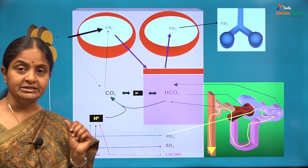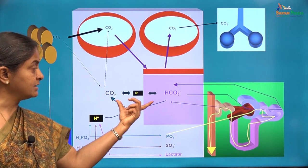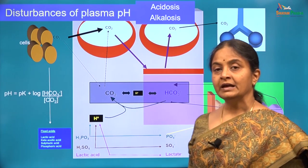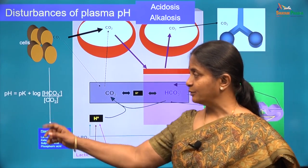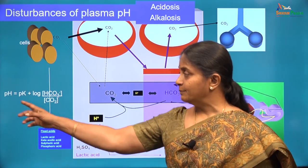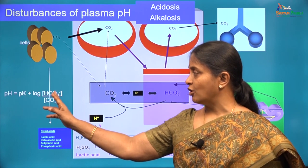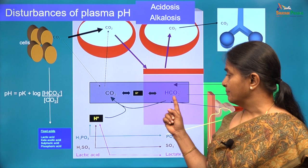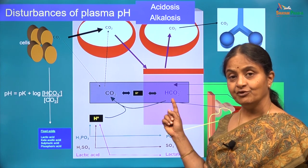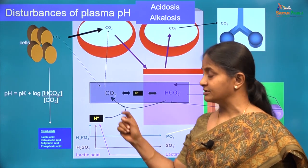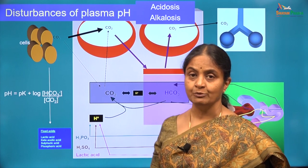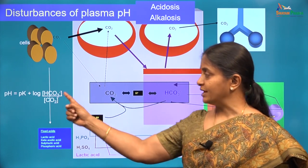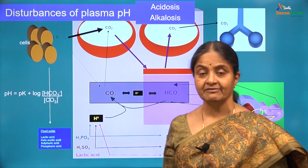The major determinant of plasma pH is the ratio of bicarbonate and carbon dioxide. As per the Henderson-Hasselbalch equation, pH is pK plus log of bicarbonate to carbon dioxide concentrations. Bicarbonate in plasma is at 24 milliequivalents per liter and carbon dioxide is at 1.2 millimoles per liter. Therefore, the ratio is 20, and that is what keeps the pH at 7.4.